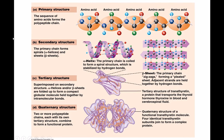Looking at all four levels together: primary structure is the actual sequence of amino acids, which determines what type of protein it will become. If you change a particular amino acid, you change the type of protein — proteins can never lose their primary structure. Secondary structure includes the alpha helices and beta-pleated sheets, held together by hydrogen bonds. Superimposed on these is tertiary structure, where the protein folds in on itself, held together by covalent and ionic bonds.